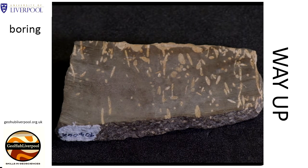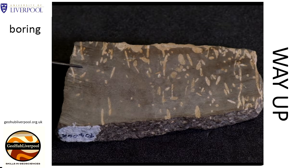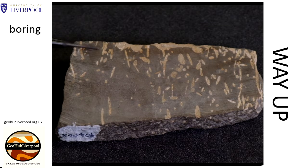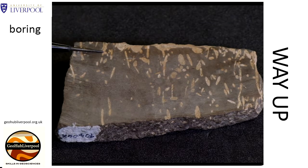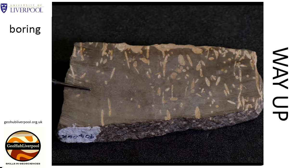Geologists use a variety of primary sedimentary structures to work out the direction of younging, or the way up direction, in rocks. In this specimen, the dark coloured rock was originally a layer of loose sediment that was lithified into rock soon after it was deposited, and formed a hard ground surface that was exposed on the sea floor.